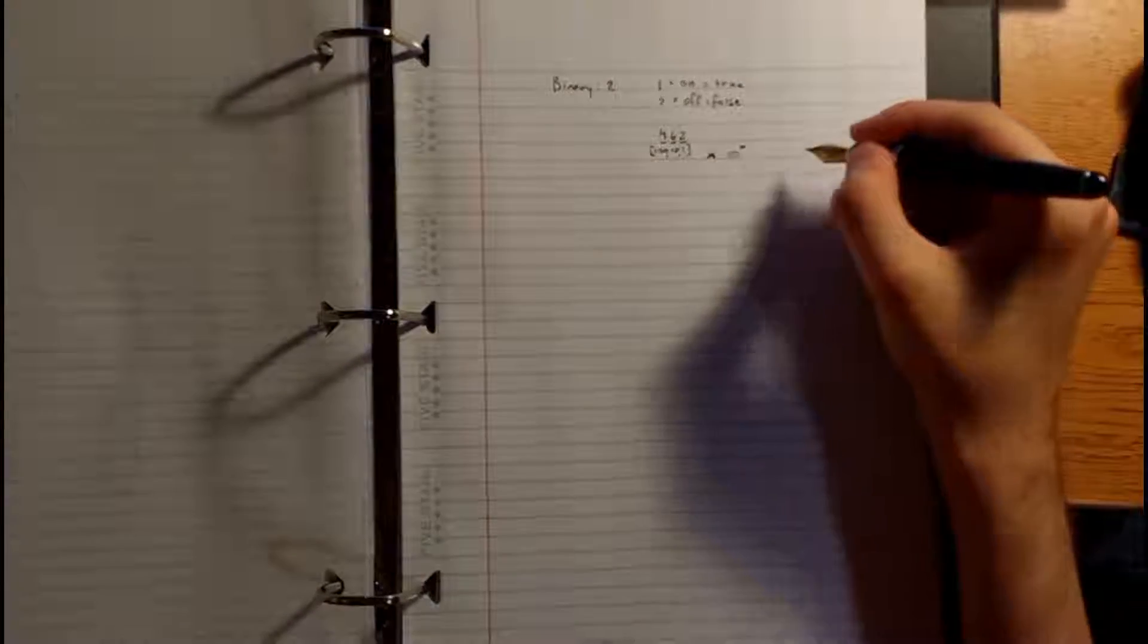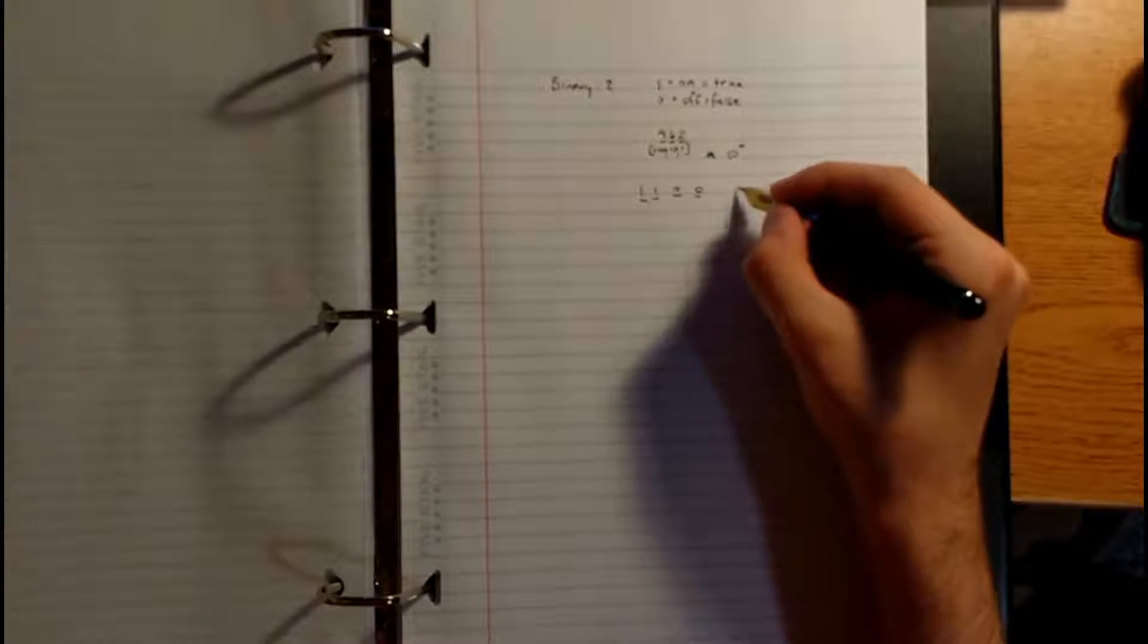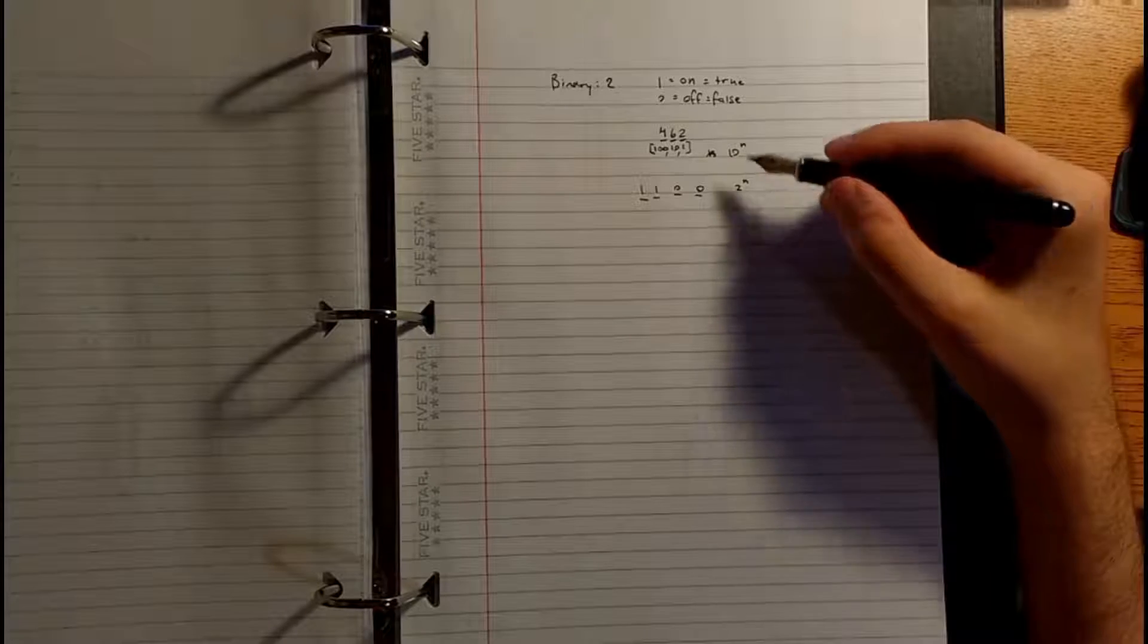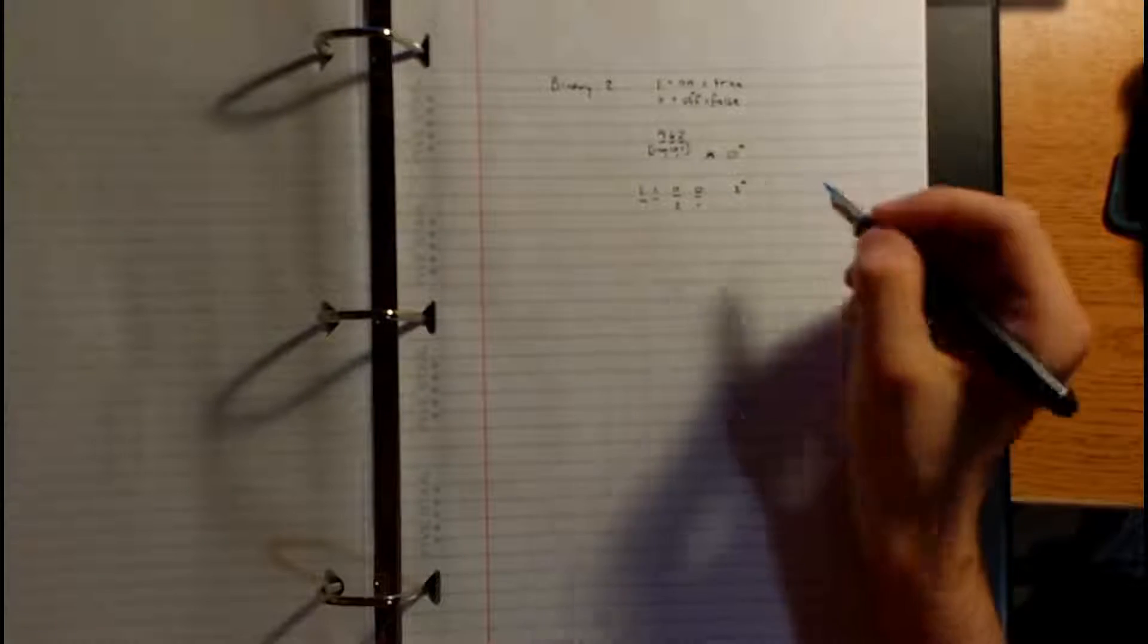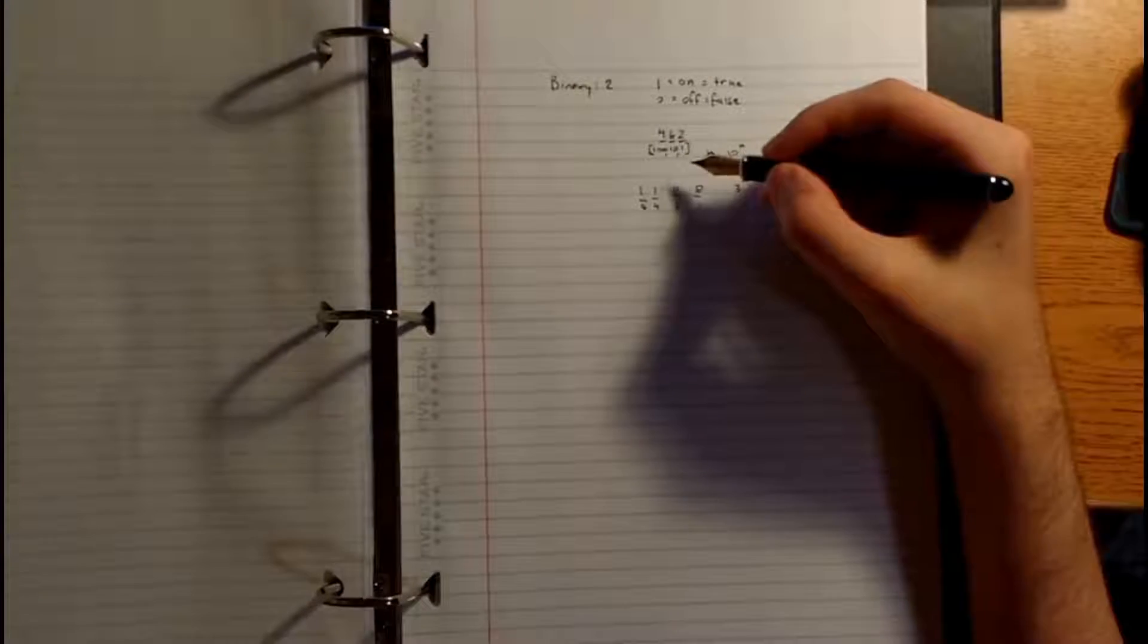Binary works the exact same way. So let's take a look at the number 1, 1, 0, 0. We've got four places here. So we're going to go, remember, 2 to the n now is our pattern because our base is 2, not 10. So 2 to the 0 is 1, 2 to the 1 is 2, 2 to the 2 is 4, and 2 to the 3 is 8. Just like you would here, 4 times 100 is 400, plus 6 times 10 is 60, plus 2 times 1 is 2, giving us 462.